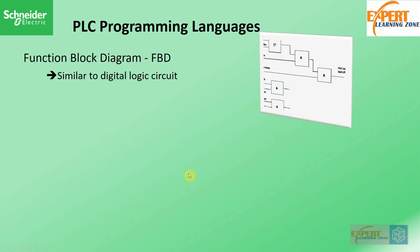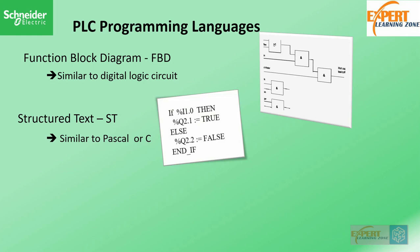The third language is the Function Block Diagram, which is very similar to digital logic circuits where we pick logic blocks and build logic together — for example using AND gates and OR gates. The fourth is Structured Text, which is similar to Pascal or C. Structured Text is used to build complex algorithms and complex industrial automation systems, especially in scenarios where using Ladder Logic or Function Block Diagram becomes very complicated to implement.